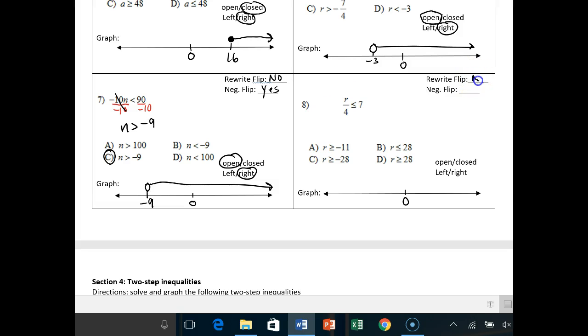Do I need to rewrite flip on 8? No, I do not because the variable is on the left-hand side. Is my variable attached to a negative coefficient? No, it is not. So I just go ahead and do the opposite of division, which is multiplication. So I multiply by 4 on both sides.